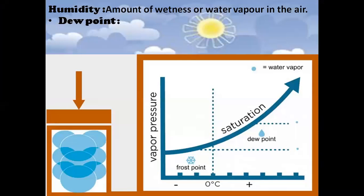Humidity is the amount of water vapour present in the atmosphere at a particular place and time. It varies from place to place. For instance, the level of humidity will be high in coastal areas. When the air is saturated with water vapour at a given temperature, it is known as the dew point.